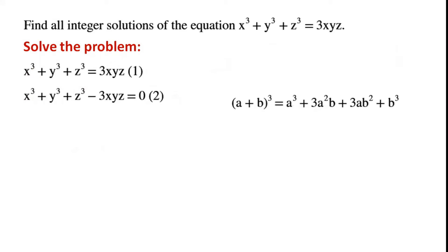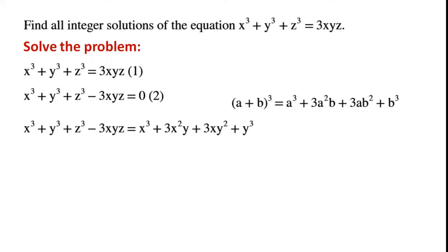We know that (a plus b) all cubed can be written as a cubed plus 3a squared b plus 3ab squared plus b cubed. We want to write x cubed plus y cubed in the form (x plus y) all cubed.